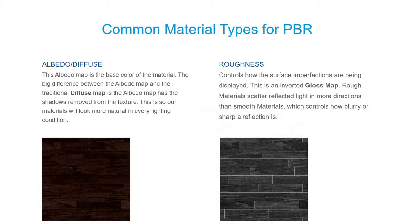Now that we understand how light works — just a broad overview — let's look at common material types in a PBR system. Albedo and diffuse: you may have heard the term diffuse map. A diffuse map is a color map. Albedo map is the same thing but a little different — it takes all the shadows out, because I don't want my shadows baked into my texture; I want to control those separately. So an albedo map is just the same thing as a diffuse map with the shadows taken out of it.